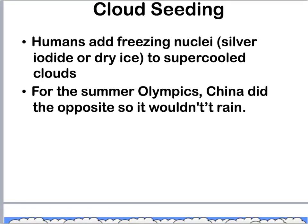In certain circumstances — for example, the Olympics in China — humans add freezing nuclei, such as silver iodide or dry ice, into supercooled clouds. This forces condensation nuclei into the air, which promotes condensation and potentially even rain, so that the skies will clear up for the opening day of the Olympics.